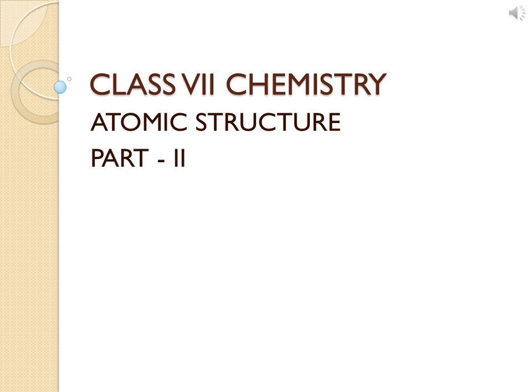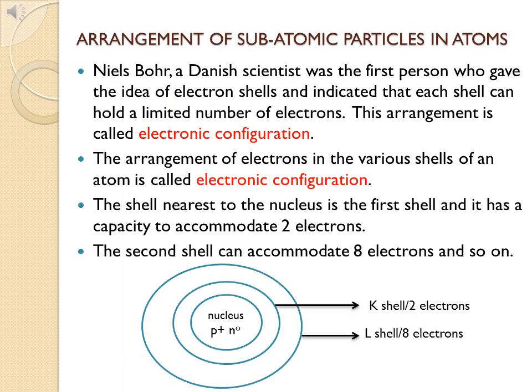This second video is a continuation of the chapter on atomic structure. By now we know the structure of an atom — that an atom comprises two parts: one is the central nucleus which contains the protons and the neutrons, and outside the nucleus are the orbits or energy shells where electrons are present.